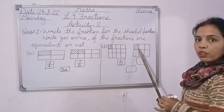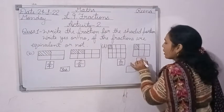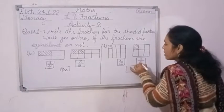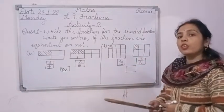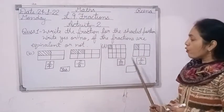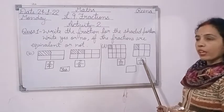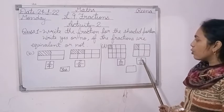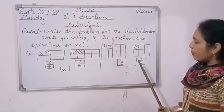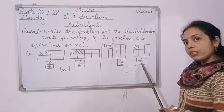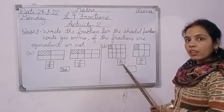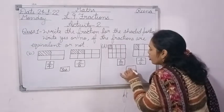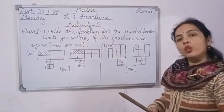On the right side there is one shaded part out of 1, 2, 3, 4, 5, 6 total parts — so write 1 upon 6. To check if 1/12 and 1/6 are equivalent: multiply the numerator 1 by 1 to get 1, but multiplying denominator 6 by 1 gives 6, not 12. So both fractions are not equal — write no.